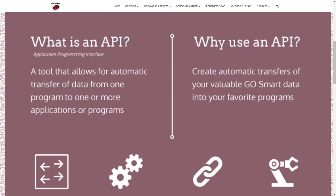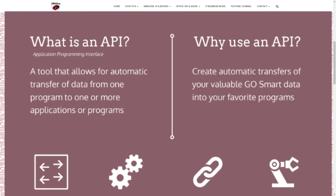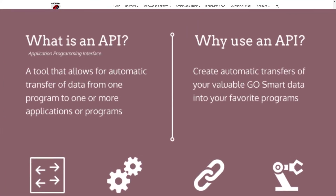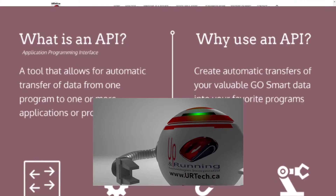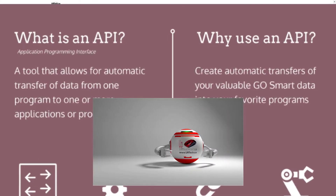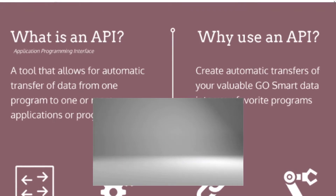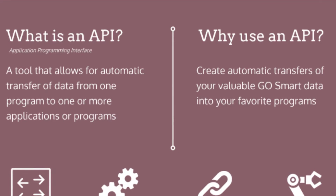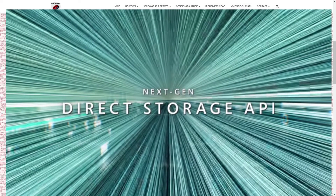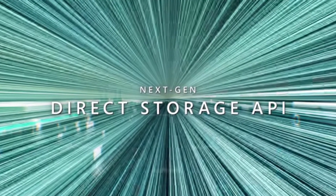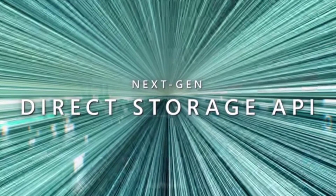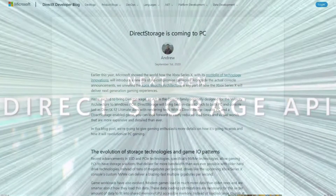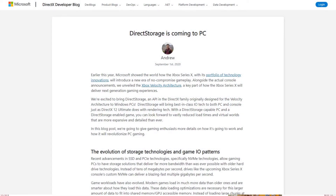Current APIs for storage require drives to handle acknowledgments of many things that don't really need to be confirmed. When data is transferred, the system must confirm receipt and handling. The new APIs allow the system to ignore many of those requests, making everything much faster. Microsoft calls this the Direct Storage API, and they announced it will be coming to PCs in 2021.